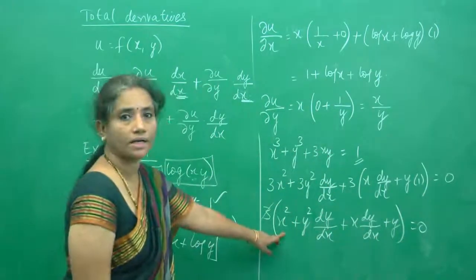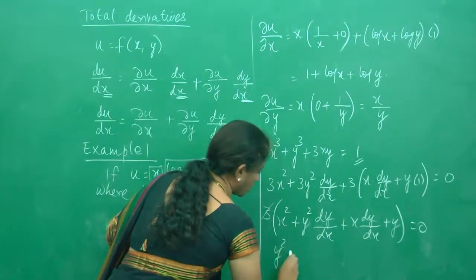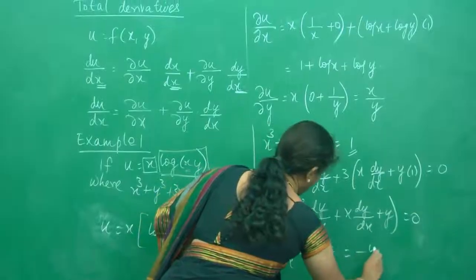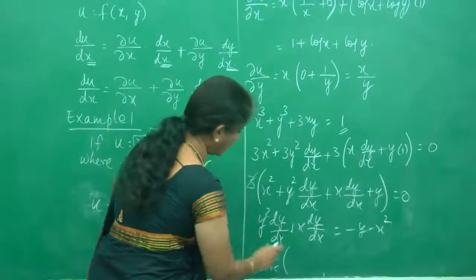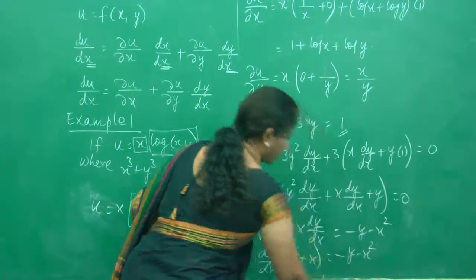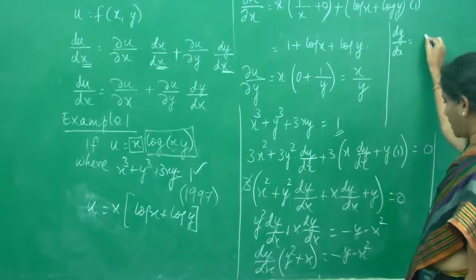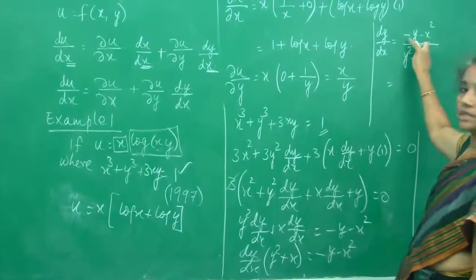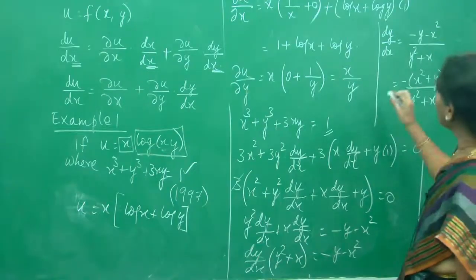Since 3 is common everywhere it cancels. So x² + y²·(dy/dx) + x·(dy/dx) + y = 0. Keep dy/dx terms on the left, take all other things to the right: y²·(dy/dx) + x·(dy/dx) = −y − x². Taking dy/dx common gives dy/dx·(y² + x) = −y − x². Therefore dy/dx = (−y − x²) / (y² + x), or equivalently −(x² + y) / (y² + x).